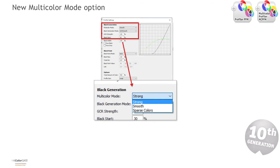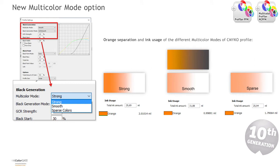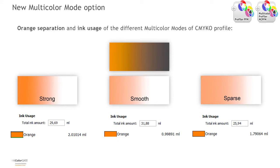The new option multi-color mode is now available in the black generation section of the profile settings window for color modes with gamut enhancing colors — for example orange and green — as well as in any color ink setups. The option Strong means that much spot color is taken into account, leading to a strong use of spot color channels and accordingly to highly saturated colors in the printout. Smooth (default) means that, depending on the dataset, the color rendering will be more color accurate, but in certain cases less saturated. When selecting the option Sparse Colors, the color separations favor the spot inks — for example an orange hue uses much of the special orange ink spot color channel and very little to no magenta and yellow inks. Likewise, the black generation will be built with a max K separation. Please see here the comparison of orange separation and ink usage of the different multi-color modes for CMYK+O profile.